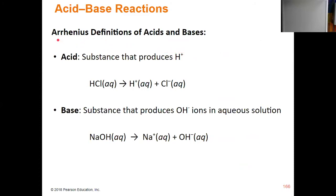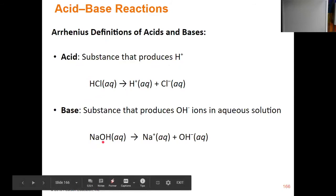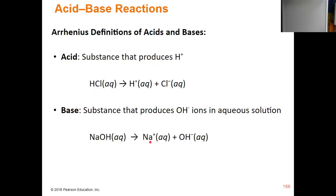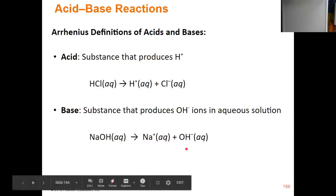We're going to look at just the Arrhenius definition of acids and bases — there are a few other definitions and we'll get to them in later chapters. We define an acid as anything that produces H+ ions. For example, HCl, when it dissociates, produces H+ and Cl−, so HCl is clearly an Arrhenius acid. An Arrhenius base is any substance that produces OH− ions in an aqueous solution. Something like NaOH, when it dissociates in water, forms Na+ and OH− ions — clearly an Arrhenius base.